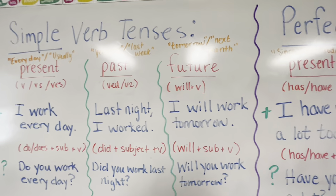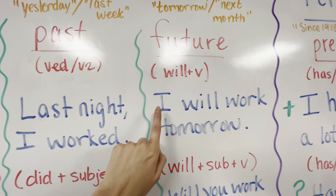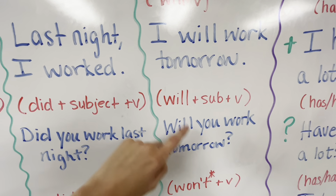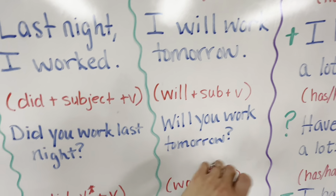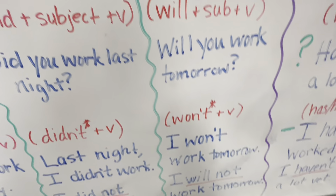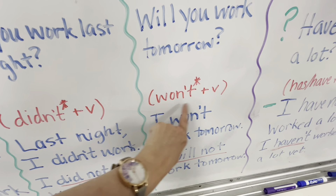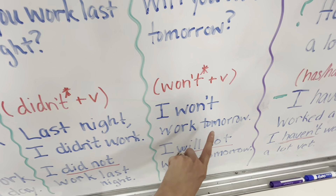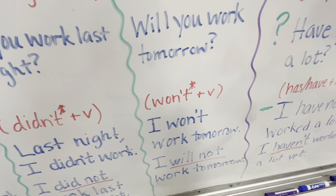Simple future: will plus verb — I will work tomorrow. To form it as a question: will, subject, verb — will you work tomorrow? To make it negative: won't and verb — I won't work tomorrow. Alternately, I will not work tomorrow.